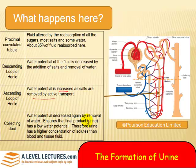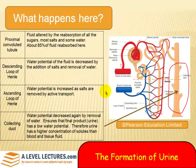The last bit we talked about was the collecting duct. Here, water potential is decreased again by removal of water. This ensures that the final product, urine, has a low water potential — you don't want to be excreting more water than you need to. Therefore, urine has a higher concentration of solutes than blood and tissue fluid.